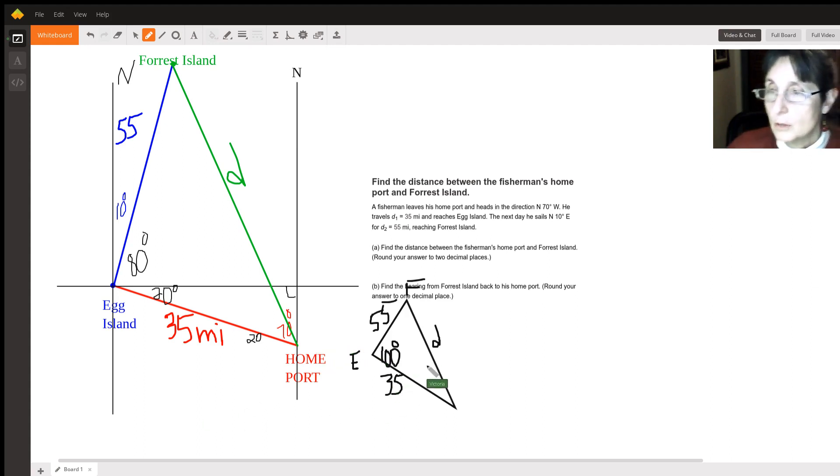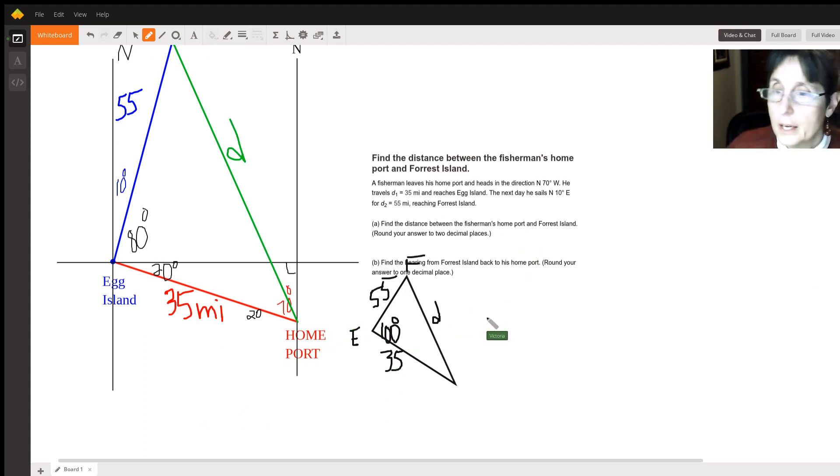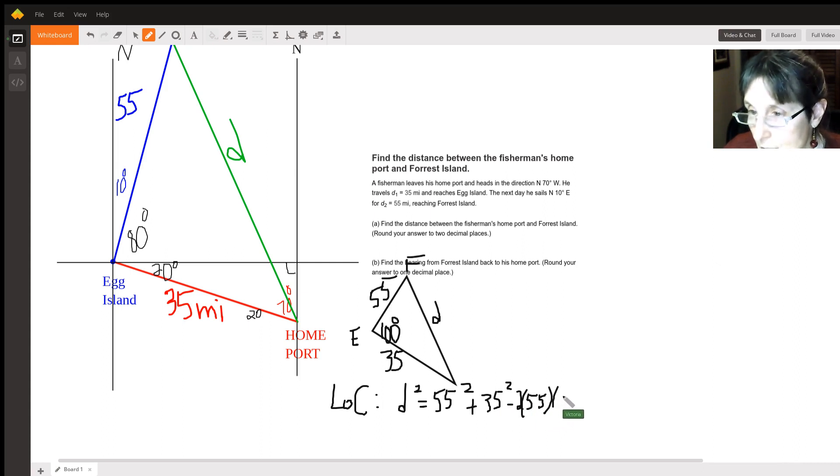So we're going to need the law of cosines, and the law of cosines says that D squared is the 55 squared plus the 35 squared minus 2 times the 55 and the 35